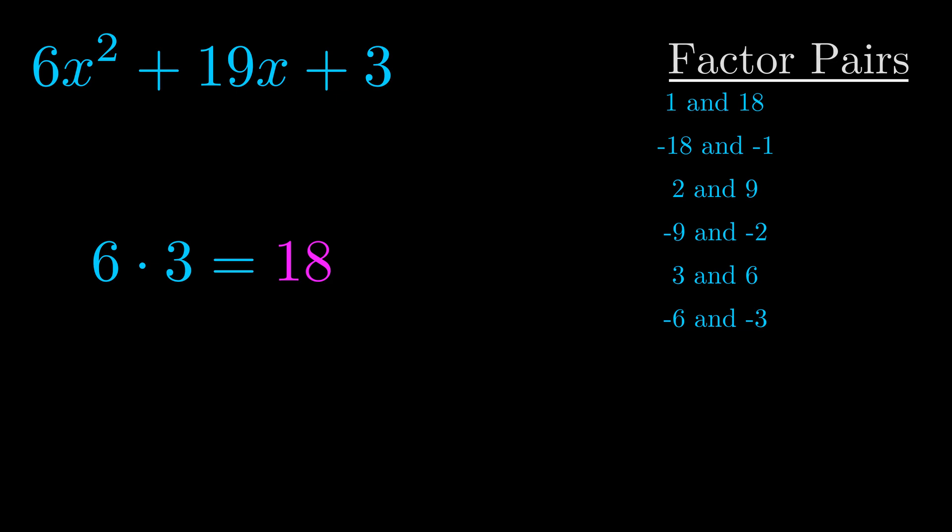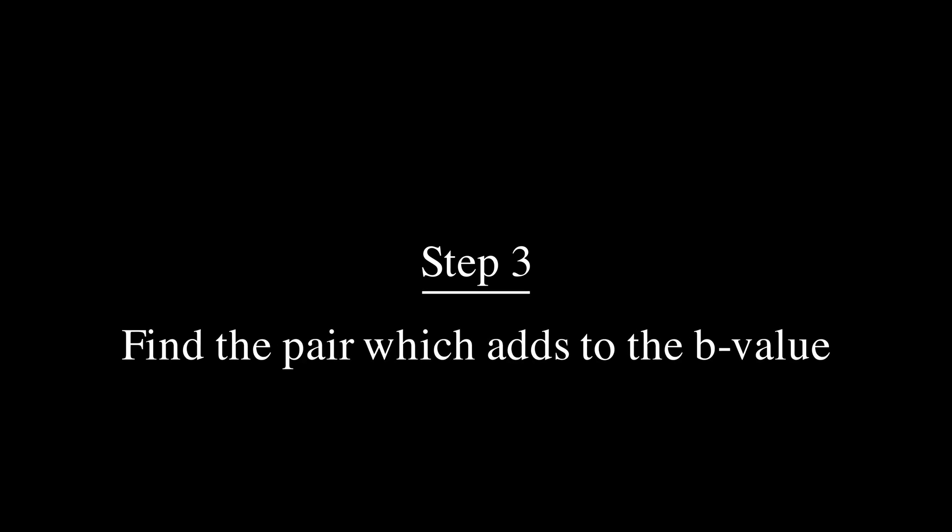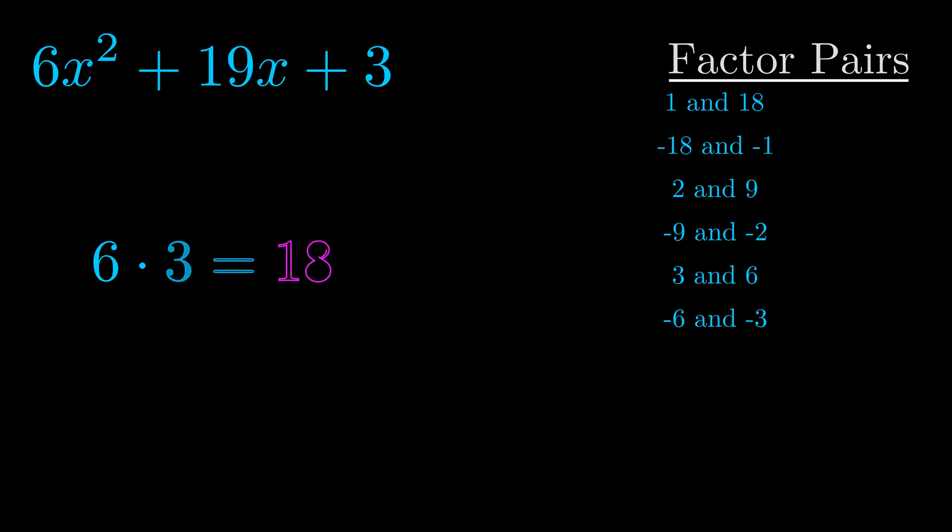Now once you have these factor pairs, the goal is to find which of these pairs adds to the b value. The b value is the coefficient on the x term. That's the middle term, the one that we haven't done anything with yet. And really this is the only factor pair that we need.